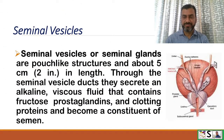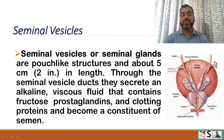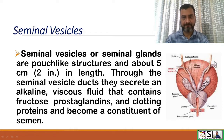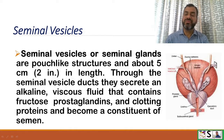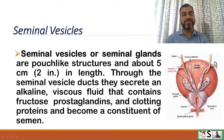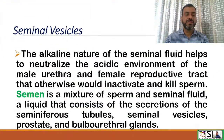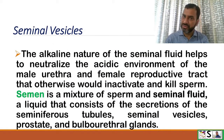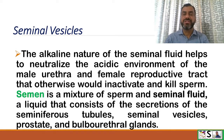The seminal vesicles, or seminal glands, are pouch-like structures about 5 cm in length. Through the seminal vesicle ducts they secrete an alkaline viscous fluid containing fructose, prostaglandins, and clotting proteins, which becomes a constituent of semen. The alkaline nature of seminal fluid helps neutralize the acidic environment of the male urethra and female reproductive tract, which would otherwise inactivate or kill the sperm. Semen is a mixture of sperm and seminal fluids.